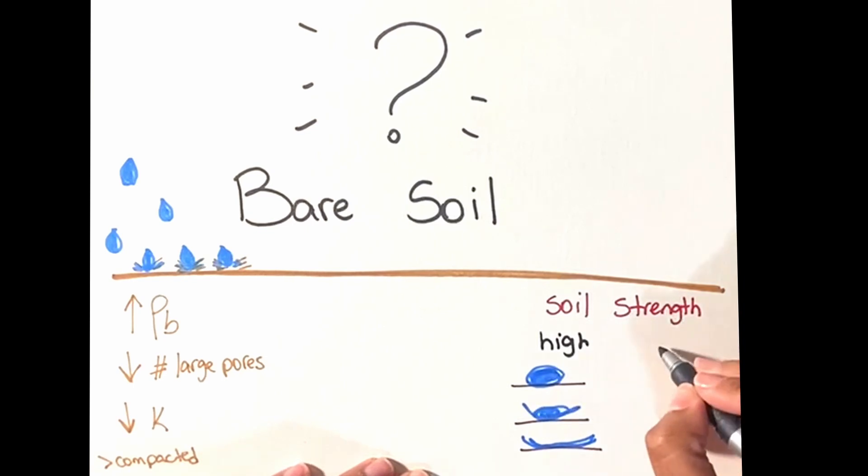In contrast, when a drop first impacts low-strength soil, the soil surface is deformed under the drop, raising a ring-shaped bulge of soil around the edge of the drop.